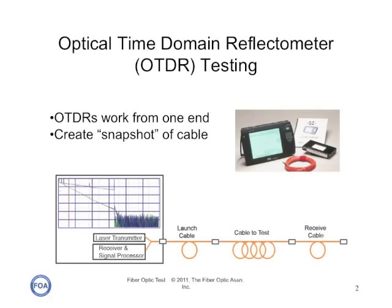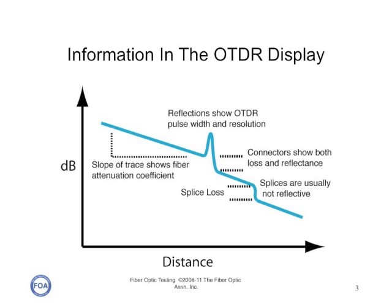If you've watched the FOA lectures 17, 18, and 19 on OTDRs, you know that OTDRs work from one end of the cable and create a snapshot of the cable. We can operate with a single launch cable into the cable under test and get some information, or add a receive cable on the far end and get information on the loss of the connector on the far end. The OTDR gives us lots of information in the trace. The slope of the trace shows the fiber attenuation coefficient; the connector loss is shown by a drop at a connector, which typically is a reflective event, and that also allows the OTDR to measure the reflectance. Splice losses are usually not reflective events, but the OTDR can measure the splice loss by looking at the drop in power across the event.